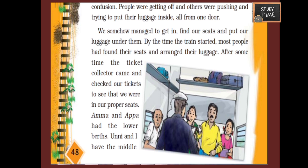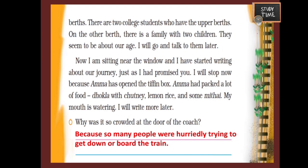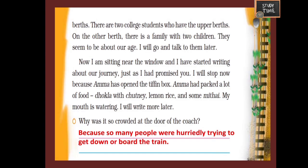They somehow managed to find their seats and put their luggage under them. By the time the train started, most people had found their seats and arranged their luggage. After some time the ticket collector came and checked their tickets. Omina's amma and appa had the lower berth, and Unni and Omina had the middle berth.